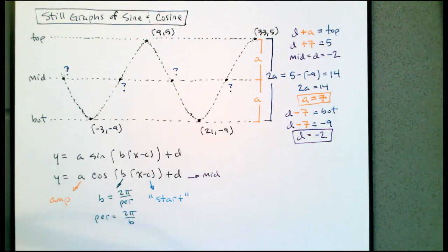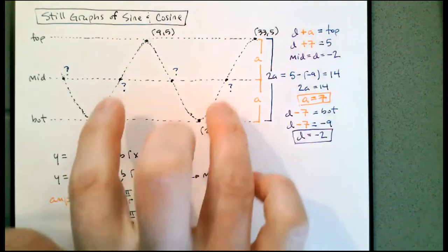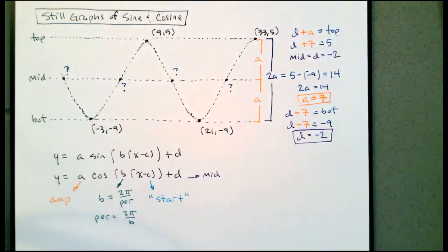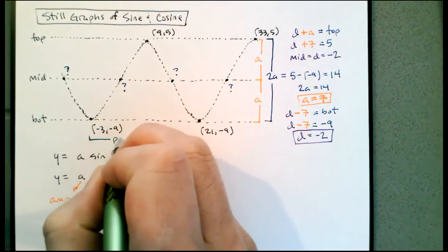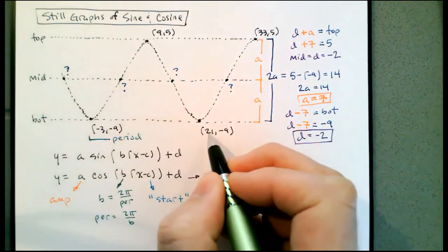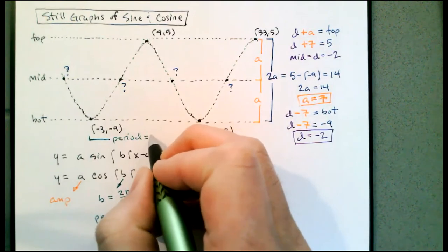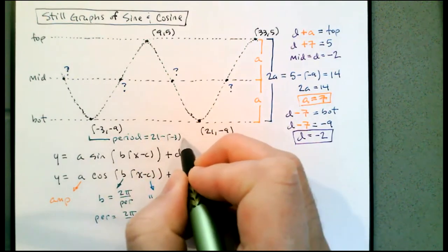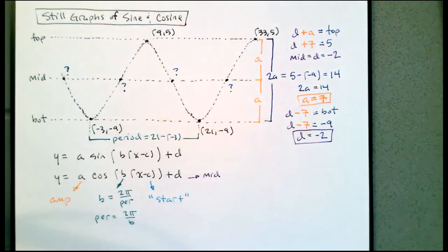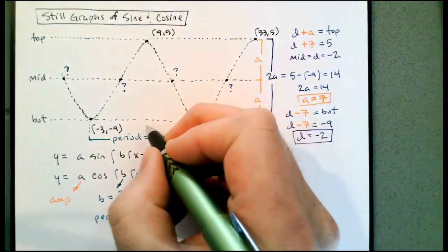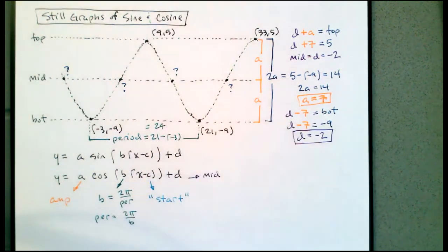I need to sort out what B is by looking at the period. The period will be the difference between any two top points, any two bottom points, or any two middle-going-up or middle-going-down points. I'll go from bottom to bottom: the period is 21 minus negative 3, which is 21 plus 3, which is 24. So the period is 24.